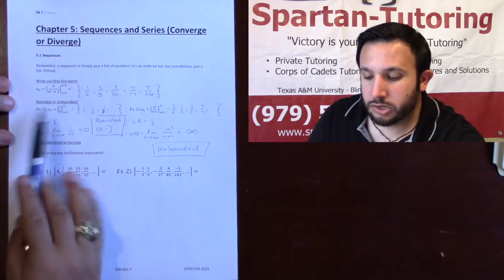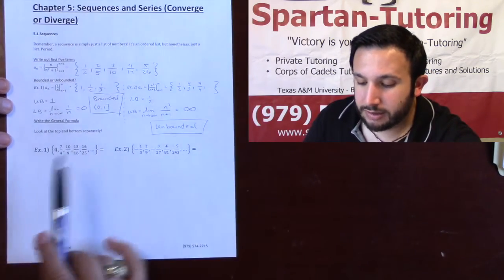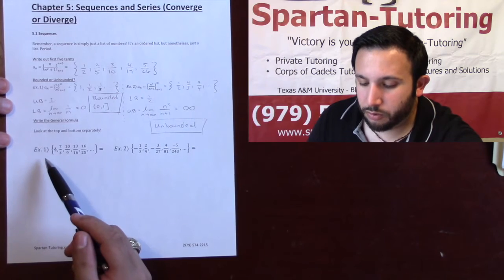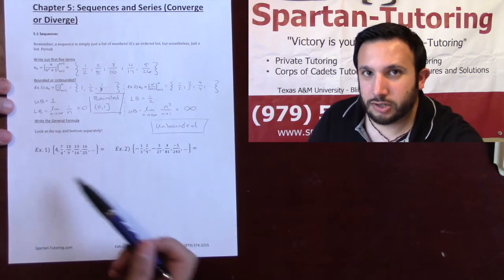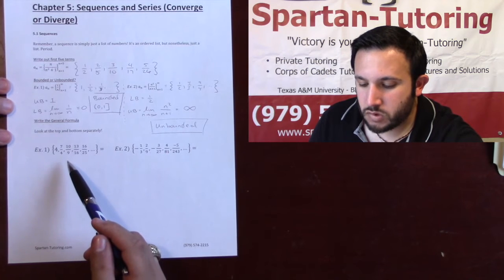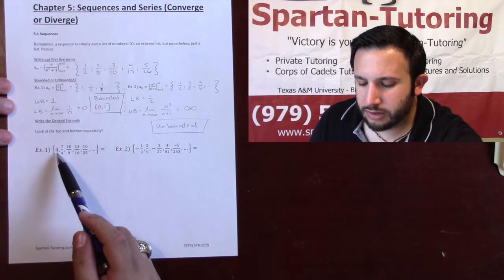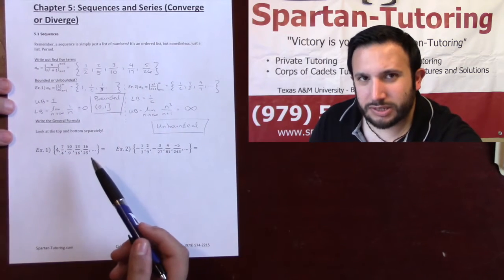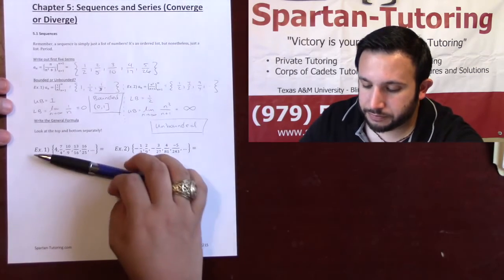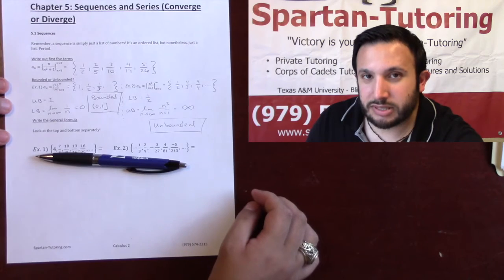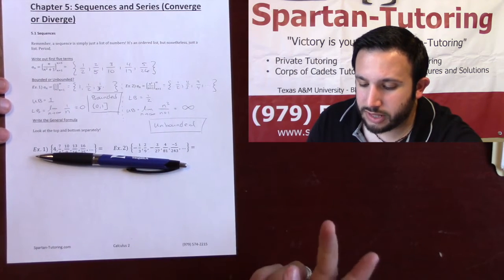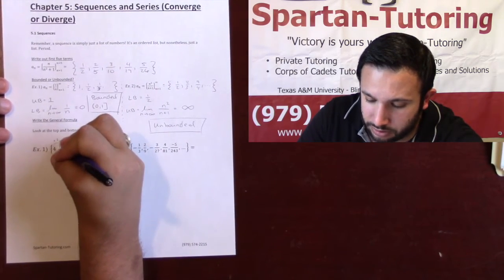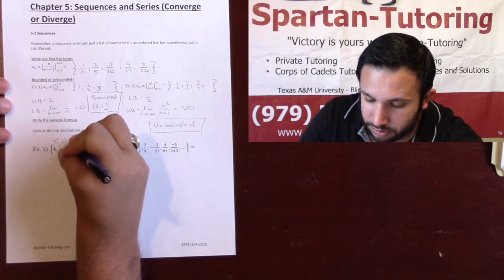Sometimes they'll give you a list and you need to write out the equation. This is pattern recognition. Don't look at the whole fraction at once — instead, look at the top and bottom separately. For example, looking at the numerators 4, 7, 10, 13, 16: going from 4 to 7 is +3, 7 to 10 is +3, 10 to 13 is +3.